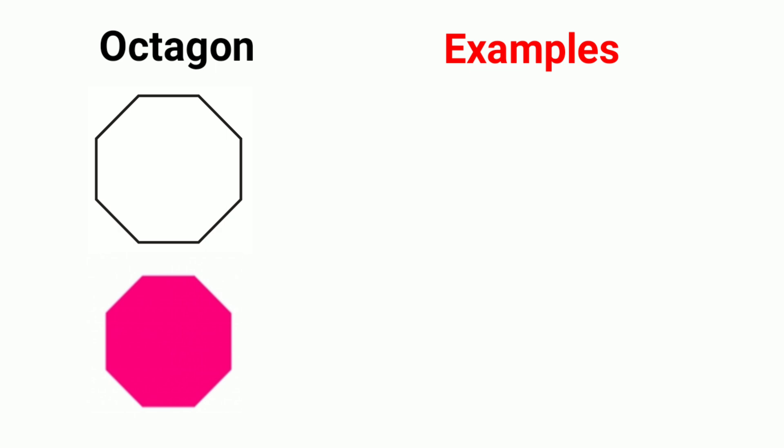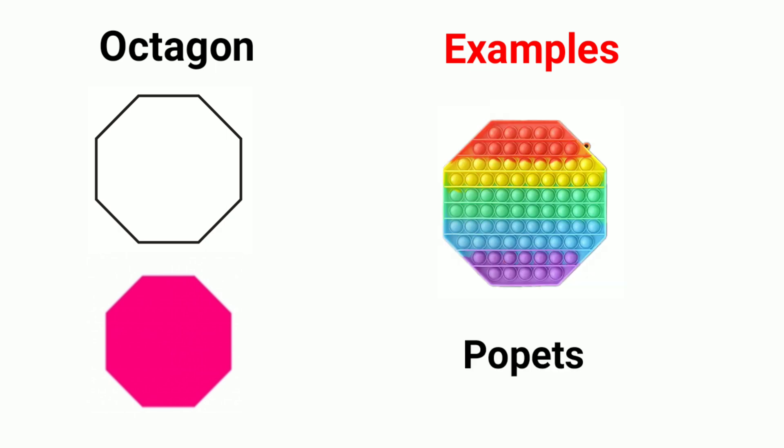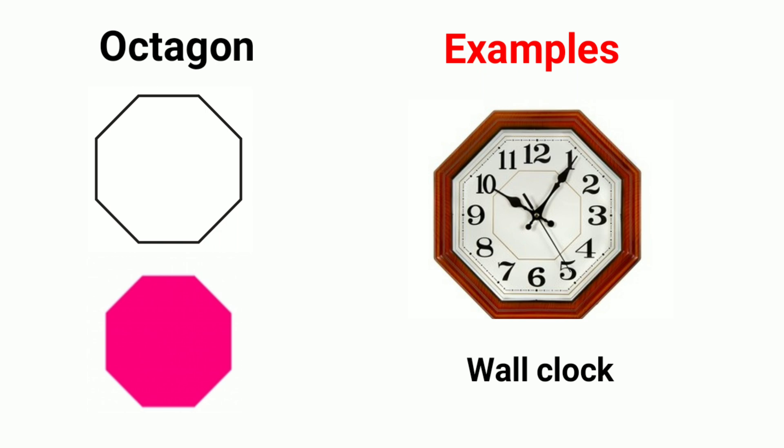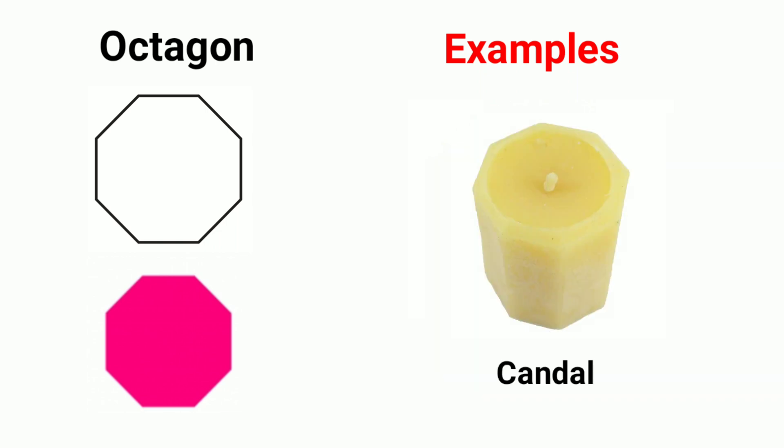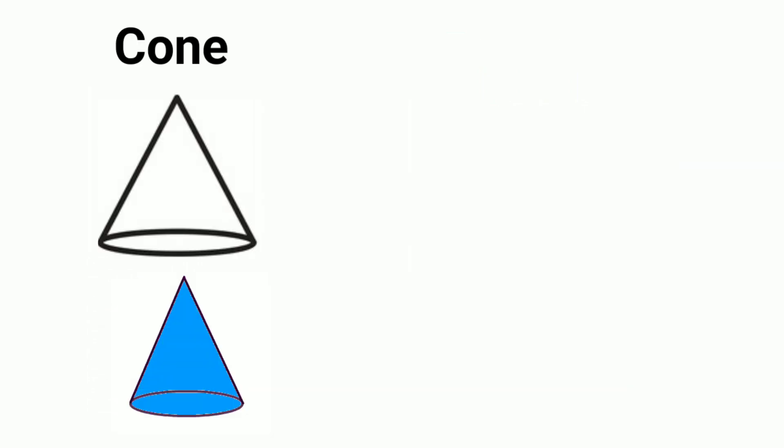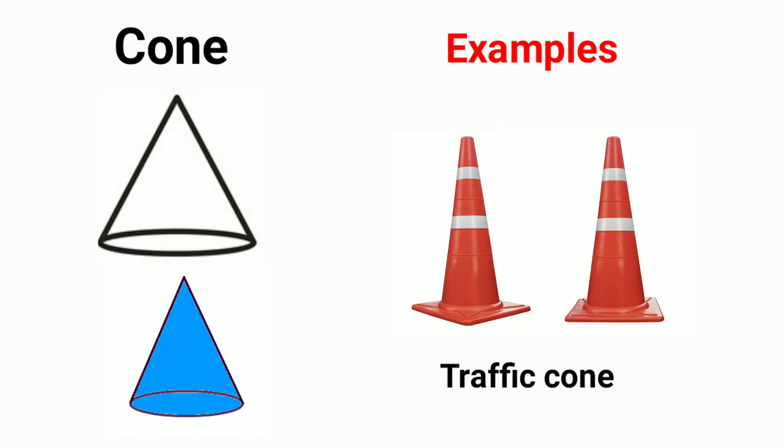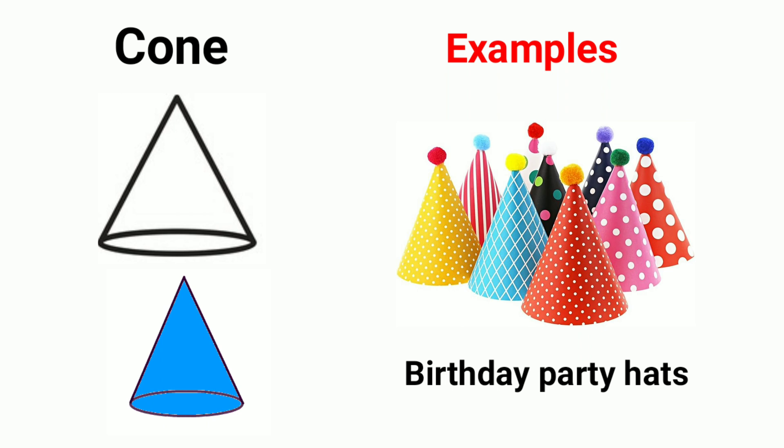Examples of octagon shapes: poppets wall clock, candle. Cone. Examples of cone shapes: traffic cone, birthday party hats, ice cream cone.